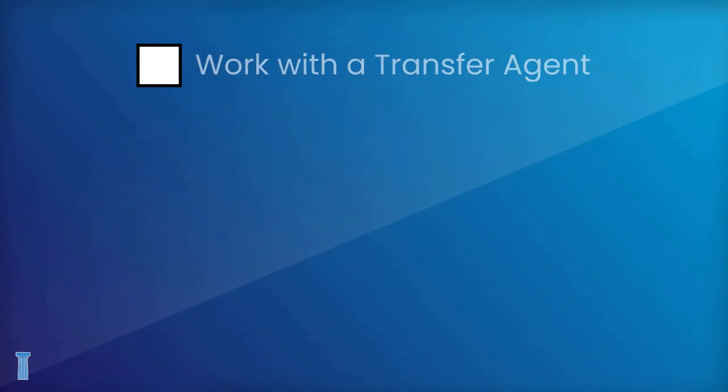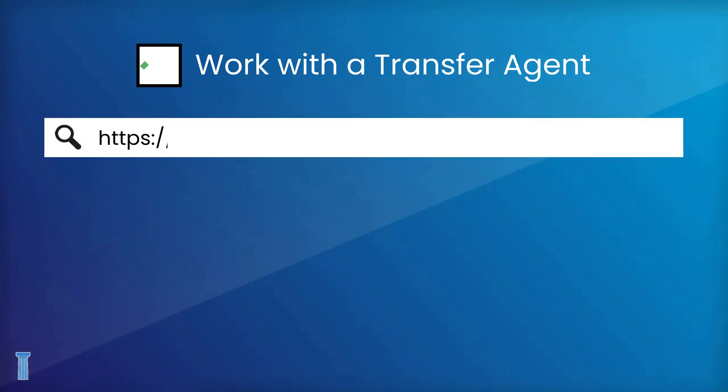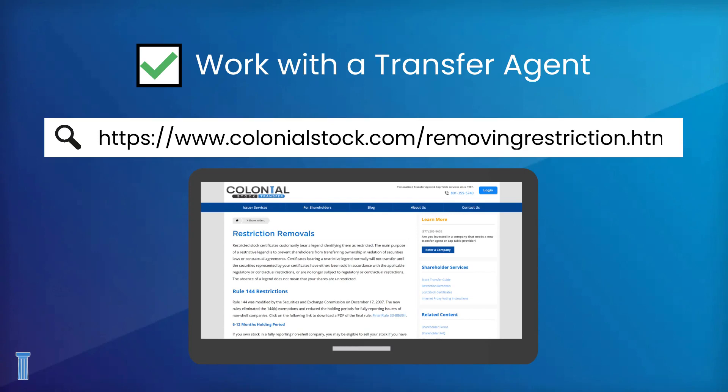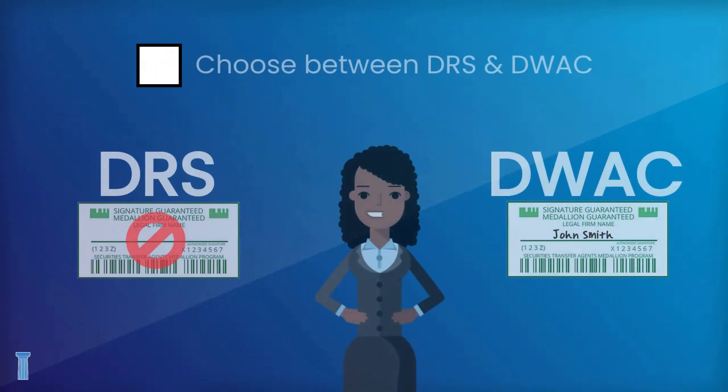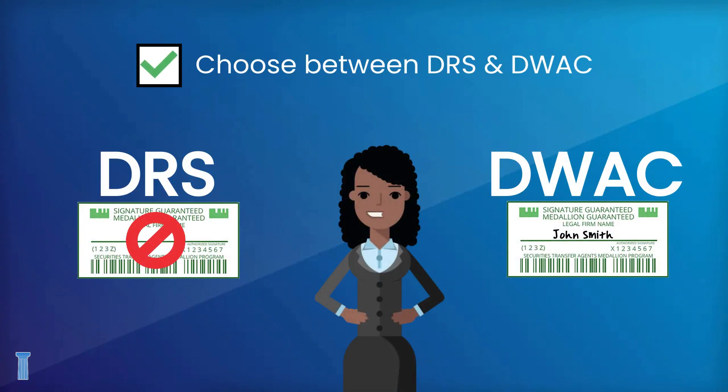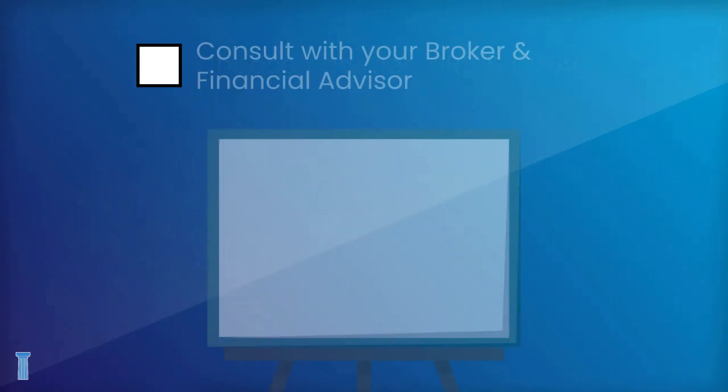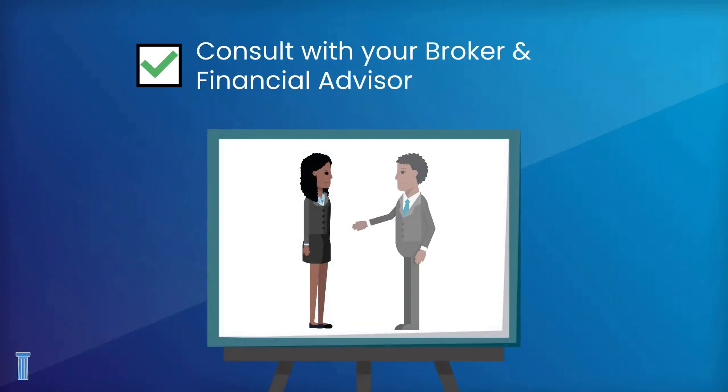Work with the transfer agent for your stock. Each company typically has one transfer agent that can help you transfer your shares to your brokerage. If Colonial Stock Transfer is the transfer agent for the stock, visit our restriction removal page to get started. Choose between DRS and DWAC for transferring your shares. Consult with your broker and financial advisor.